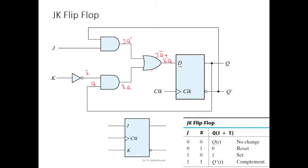So what is the input to the D flip-flop? The input equation is D = J·Q̄ + K̄·Q. This is the input equation for this JK flip-flop.